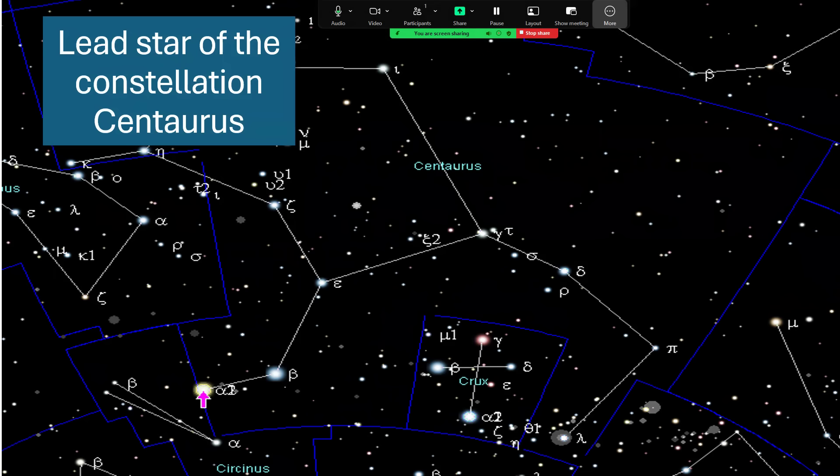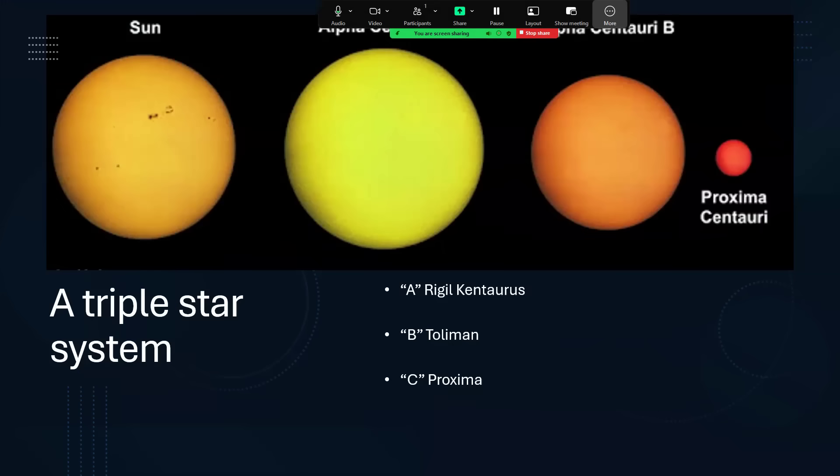It is in fact a triple star system. We have a comparison here between the Sun and the three stars of Alpha Centauri. Alpha Centauri A is called Rigel Centaurus. Alpha Centauri B has a name Toliman. And Alpha Centauri C is called Proxima Centauri because it's the nearest star to the Sun by a very small margin compared to the other two, at just over 4.2 light years away from us.